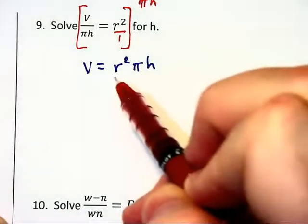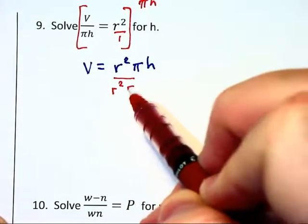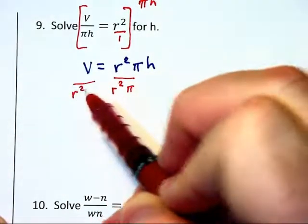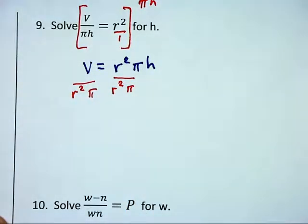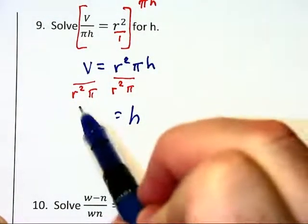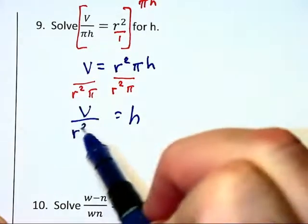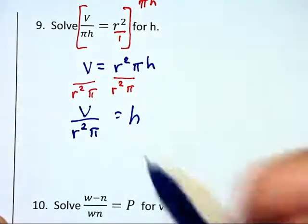We're solving for h so we want to divide off the r squared pi and that would then give us what we're looking for. h on the right is equal to v over r squared pi or pi r squared if you want to write it that way.